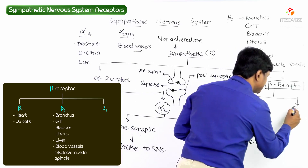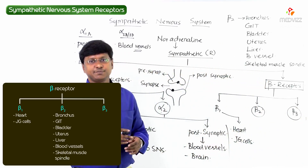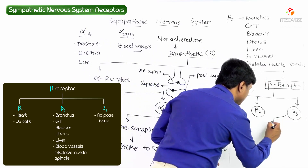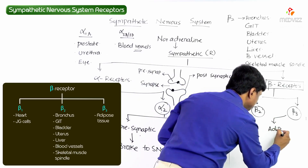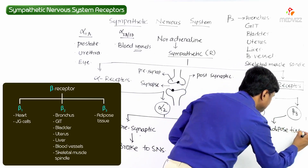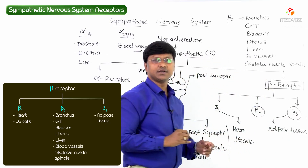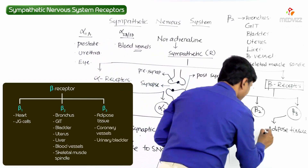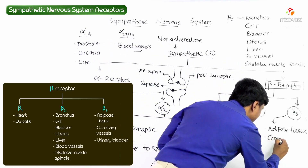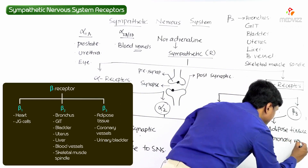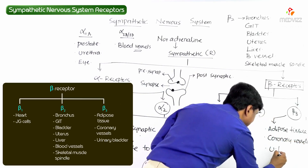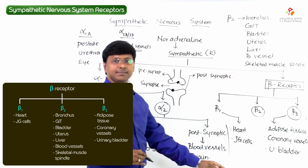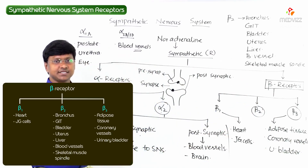Beta 3 receptors are present mainly within the adipose tissue. They are also present within the coronary vessels and the urinary bladder. These are all the places where beta 3 receptors are located.